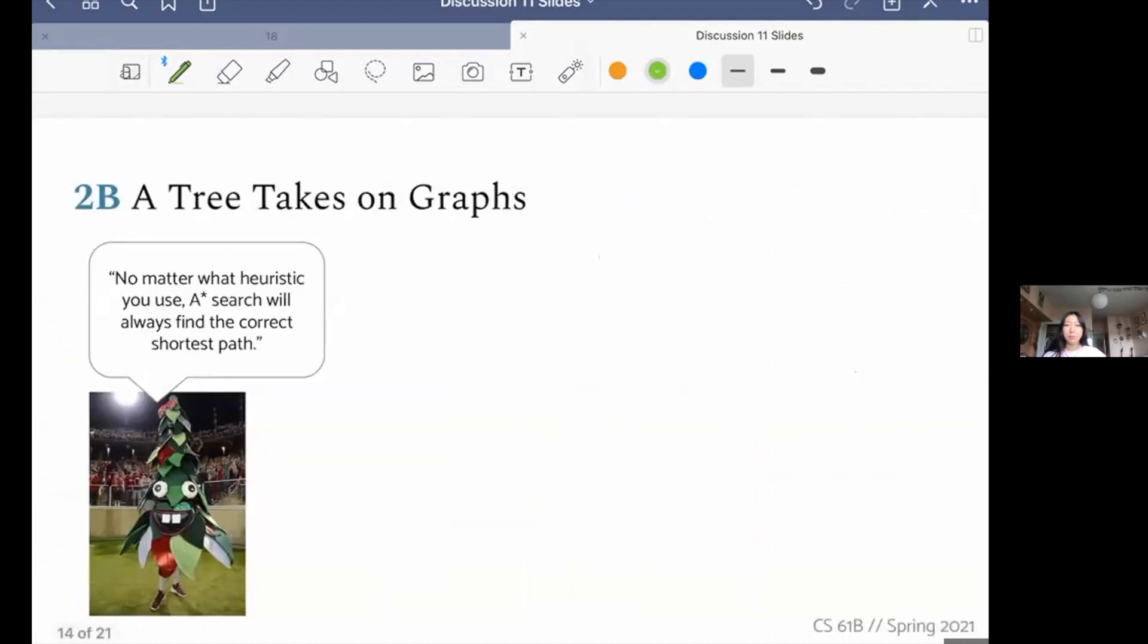The next part says, no matter what heuristic you use, A-star search will always find the correct shortest path. Again, take a moment and think about this on your own first. And so this one is a little tricky. Let's take a moment and think about what makes A-star search correct or how it really works.